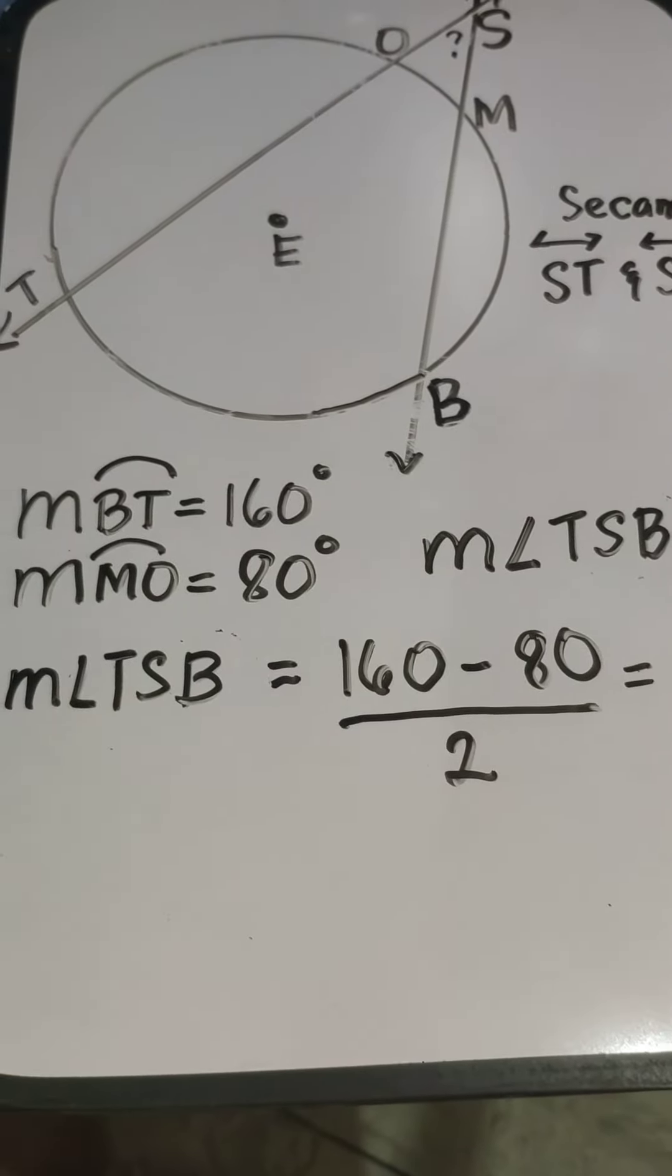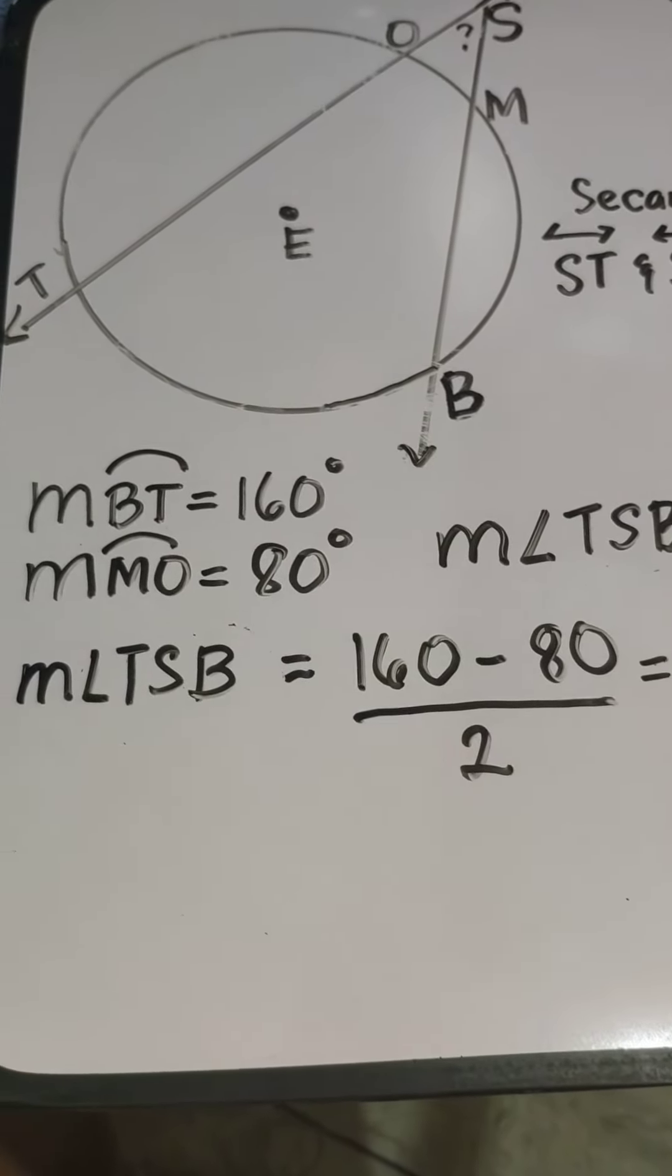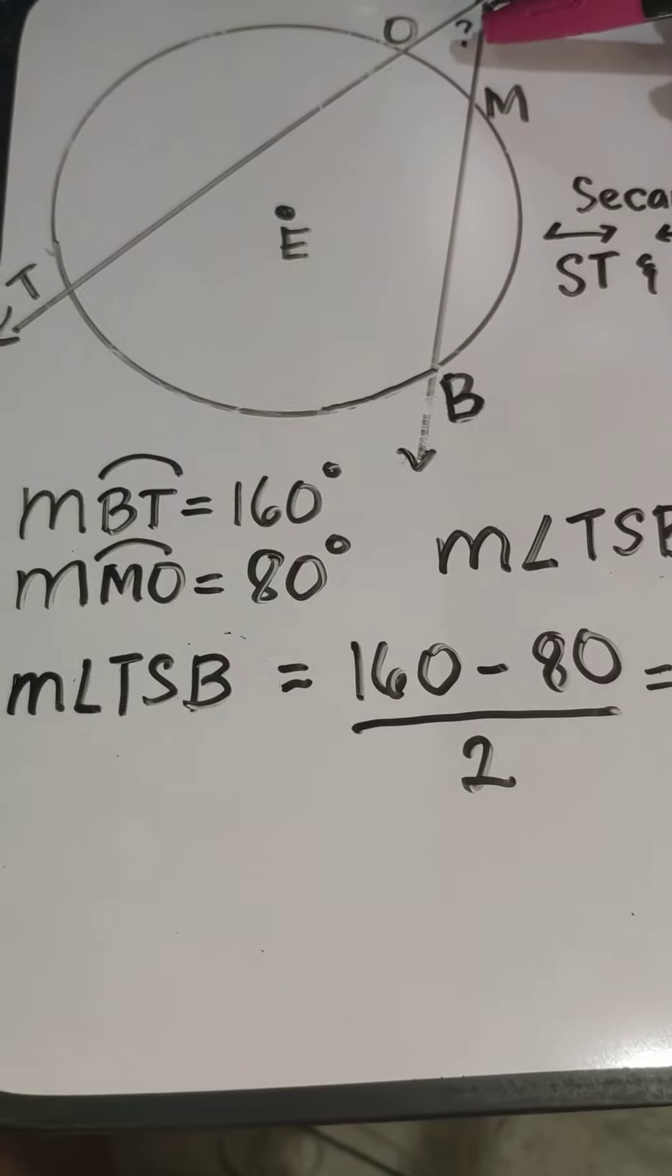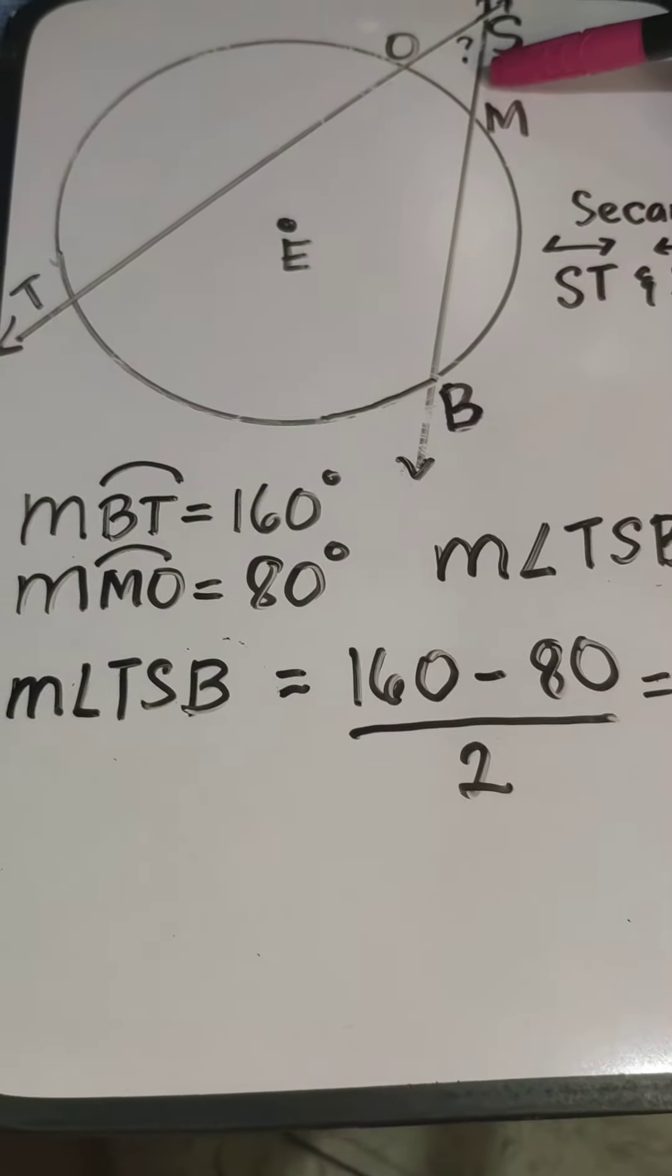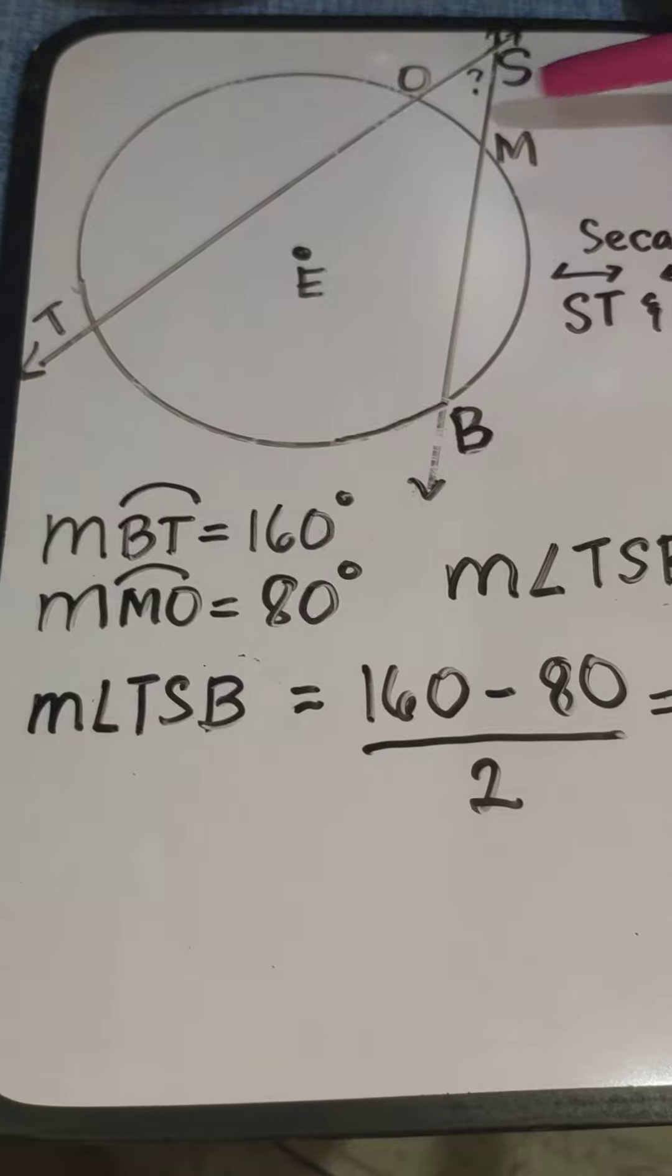Good morning! Our lesson is about finding the measure of an angle formed outside the circle, formed by two secants.